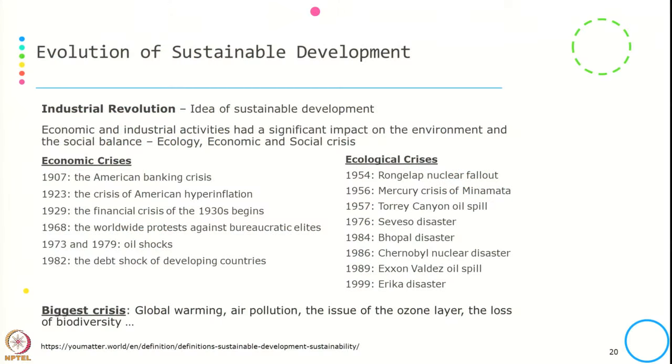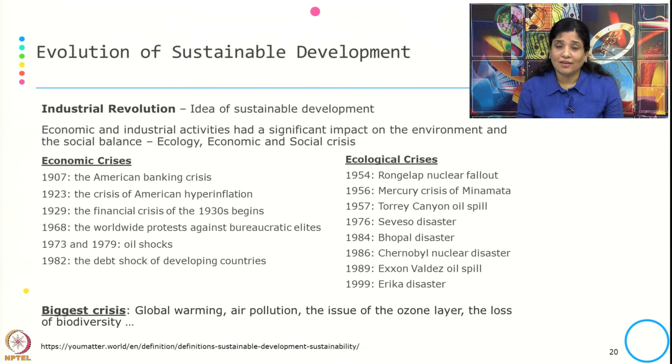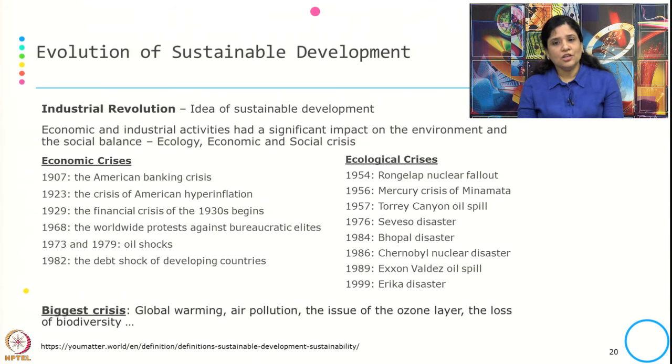In this session we will see how sustainable development is a concept that has evolved over a period of time. The idea of sustainable development came after the industrial revolution, because the economic and industrial activity that started after the industrial revolution had a significant impact on the environment and social balance, leading to ecological, economic and social crisis.